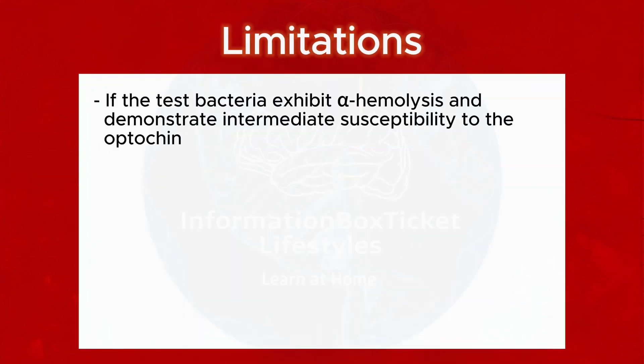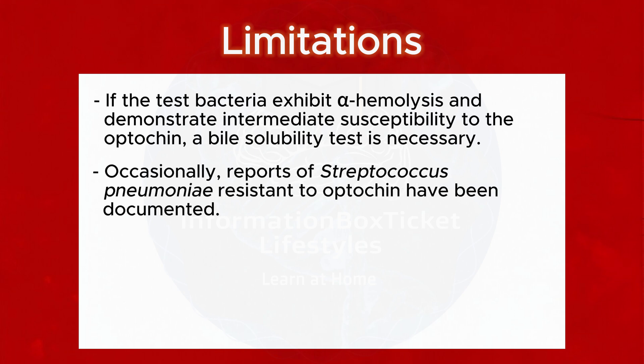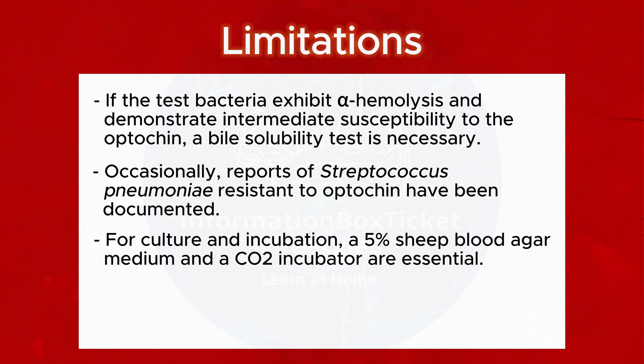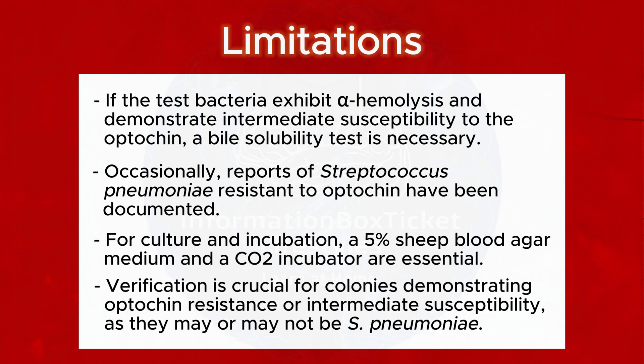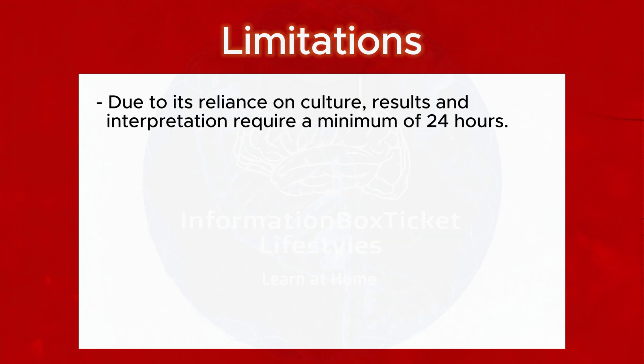Limitations: If the test bacteria exhibit alpha-hemolysis and demonstrate intermediate susceptibility to Optochin, a bile solubility test is necessary. Occasionally, reports of Streptococcus pneumoniae resistant to Optochin have been documented. For culture and incubation, a 5% sheep blood agar medium and a CO₂ incubator are essential. Verification is crucial for colonies demonstrating Optochin resistance or intermediate susceptibility, as they may or may not be S. pneumoniae. Due to its reliance on culture, results and interpretation require a minimum of 24 hours.